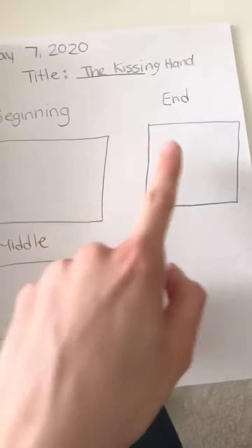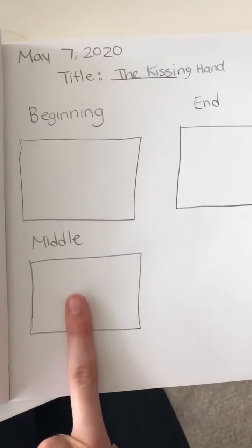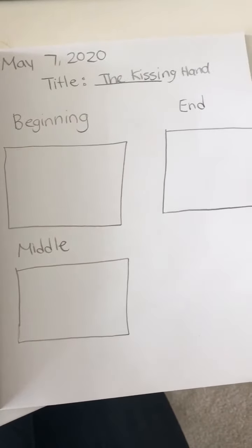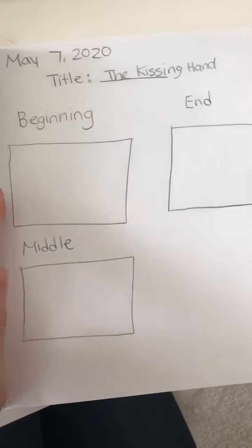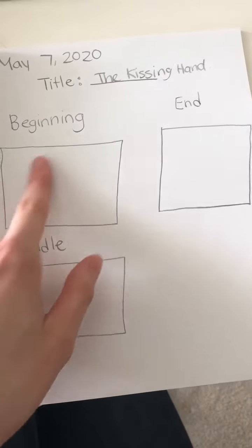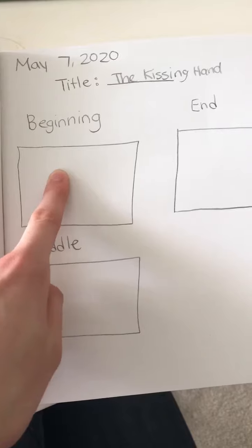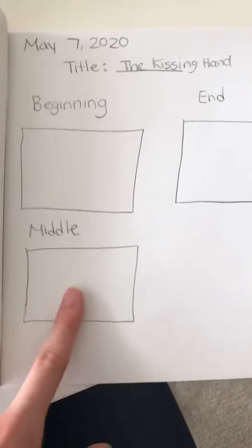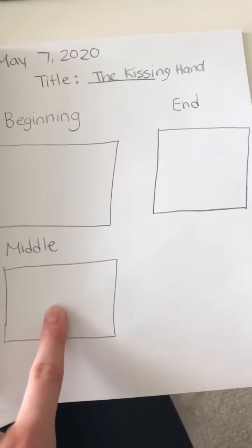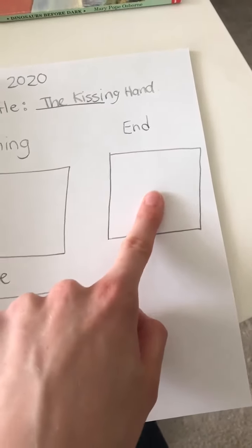I have three boxes — I couldn't fit them all because I wrote them out too big. Here we have the beginning, the middle, and the end. You're going to draw or write what happens at the beginning of the story, what happens in the middle, and what happens at the end.